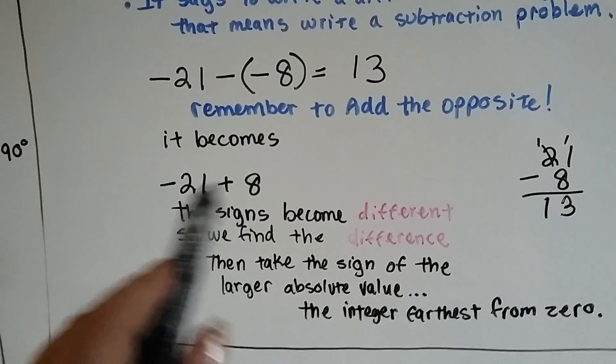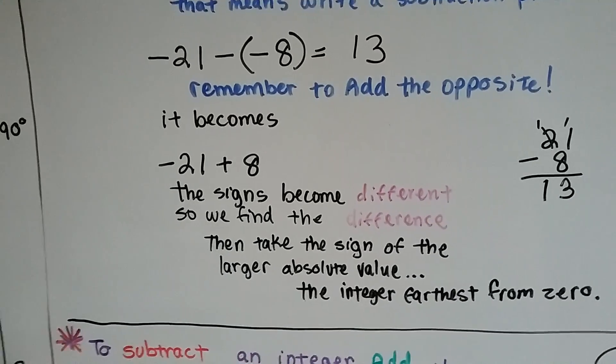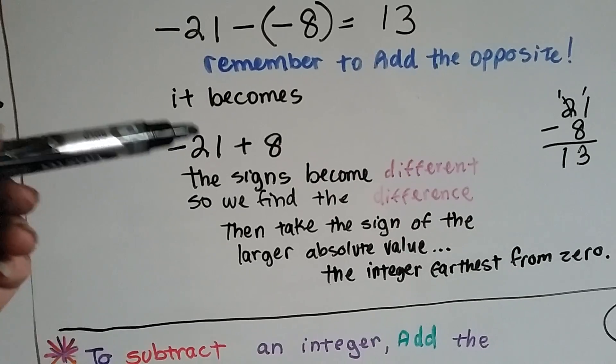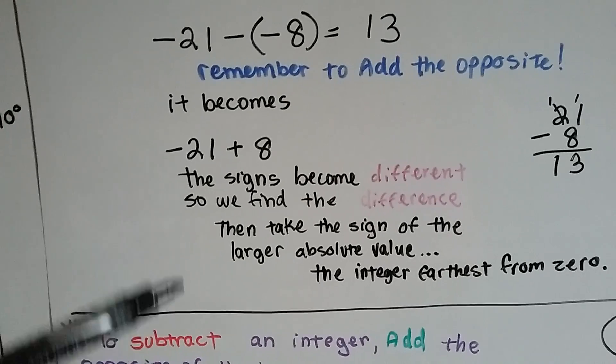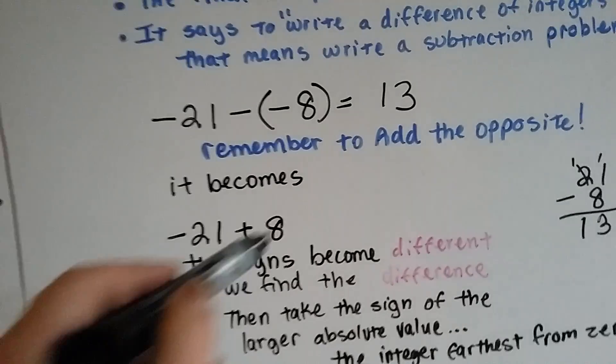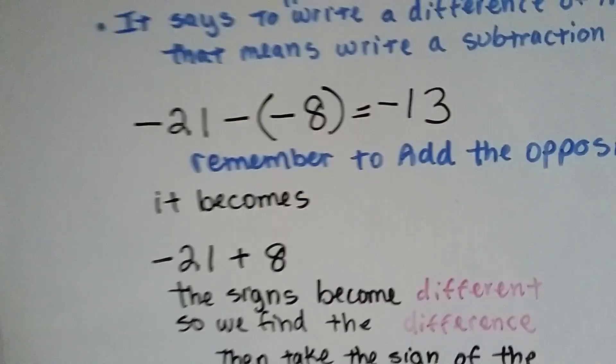Ah! Which one has a higher absolute value? Which one has a greater absolute value? Which one is farther away from zero on the number line? 21 or 8? The 21. And it's got a minus sign. So we know the answer has a minus sign.